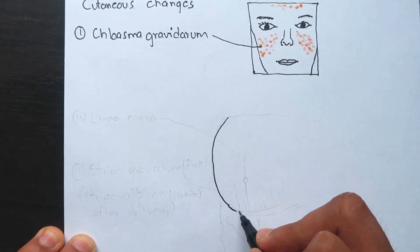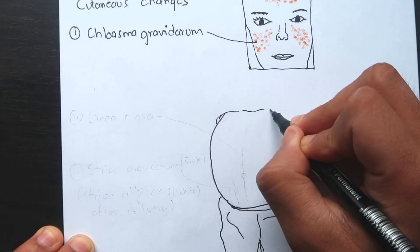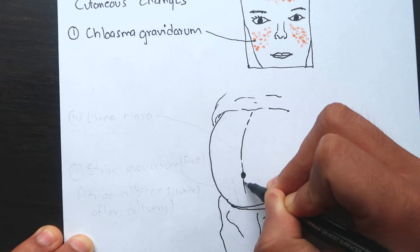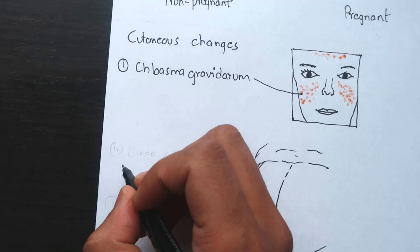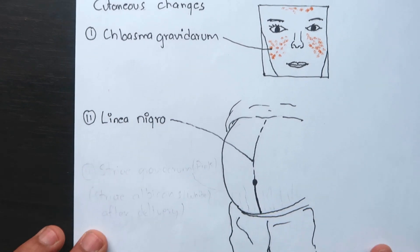In the abdomen, a brownish black pigmented area in the midline stretching from the xiphisternum to the symphysis pubis is called linea nigra. The pigmentary changes are probably due to melanocyte stimulating hormone from the anterior pituitary.